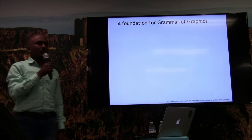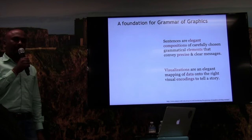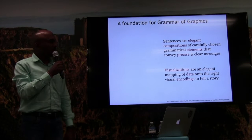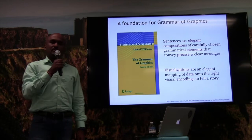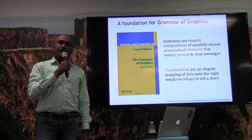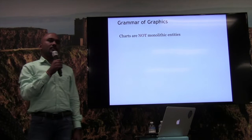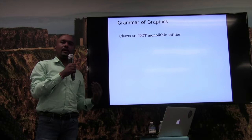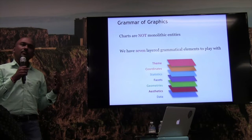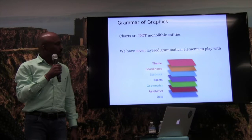Sentences are elegant compositions of grammatical elements that convey precise meanings. Similarly, visualizations are elegant mappings of data with visual encodings to tell a data story — we've simply replaced sentences with visualizations, and words and grammatical elements with data. This was put forth by Wilkinson in his book 'Grammar of Graphics,' a seminal book that has been the foundation for many packages. The fundamental concept is that charts are not monolithic entities. We should not think in terms of charts; rather, we should think about data encoding and fundamental representation elements. Wilkinson proposes a seven-layered structure.